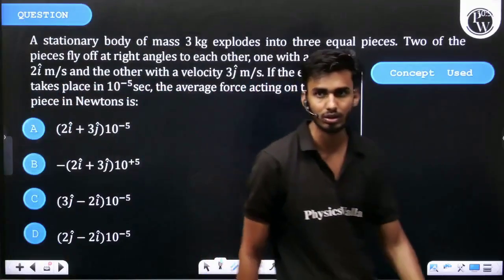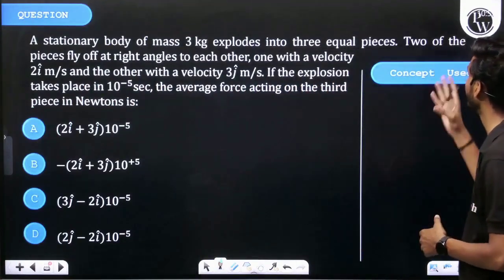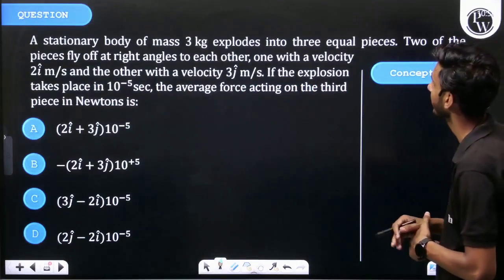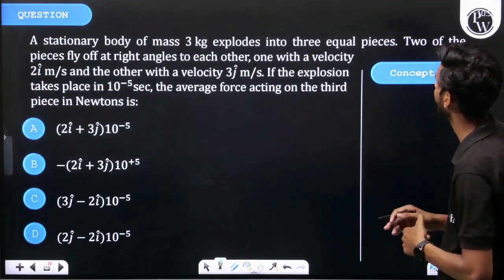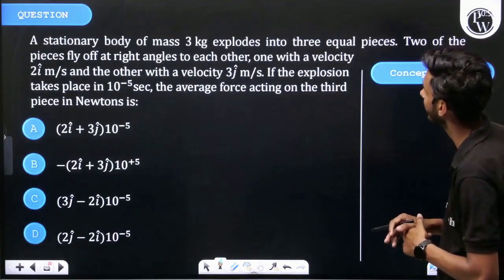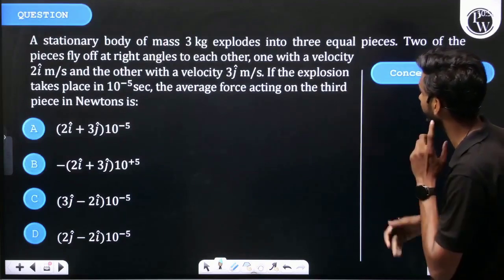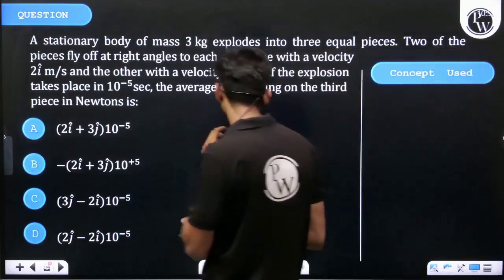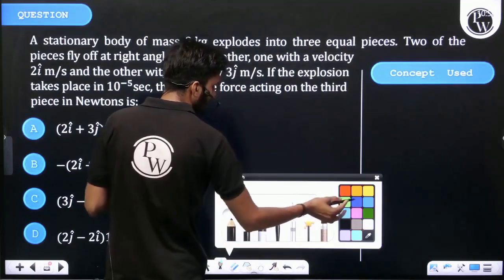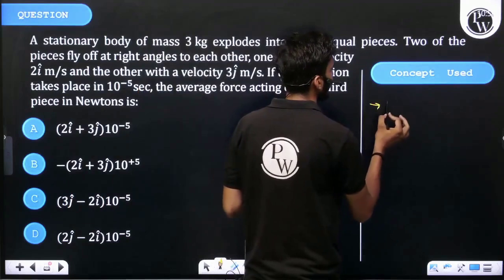Let's see the question: A stationary body of mass 3 kg explodes into three equal pieces. Two pieces fly off at right angles to each other, one with velocity 2i cap and the other with velocity 3j cap. If the explosion takes place in 10^-5 seconds, find the average force acting on the third particle. The concept to use here is momentum conservation.